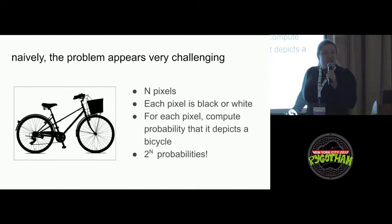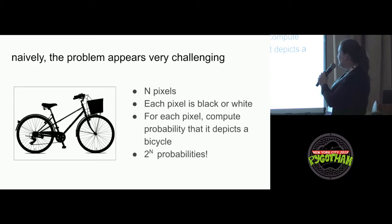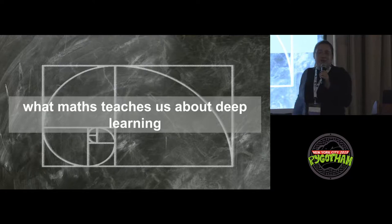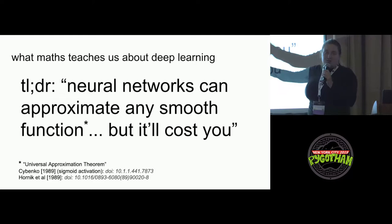The problem appears actually quite challenging. You have a lot of pixels. In this case, it's a very simple case. Pixels are black or white. And you have to compute these probabilities for all these pixels. And there's a lot of them. So why is it actually easy? Well, let's take a tiny little bit of a sidestep. What does maths actually have to say about this?